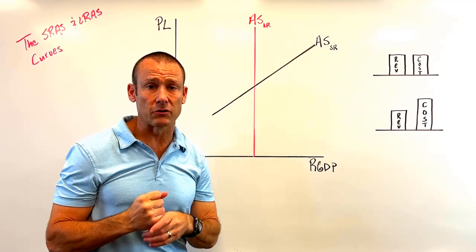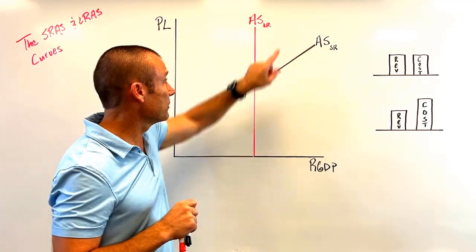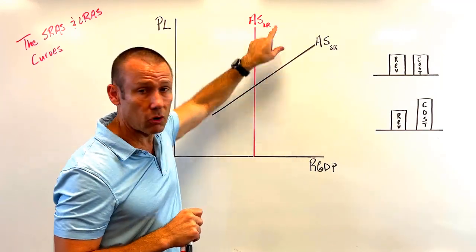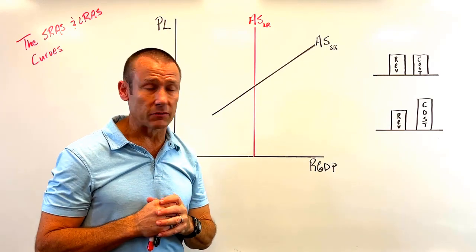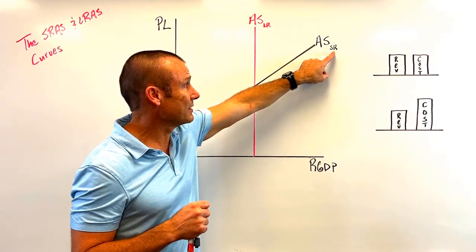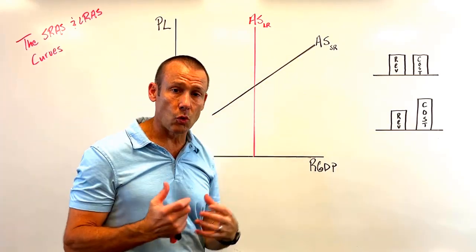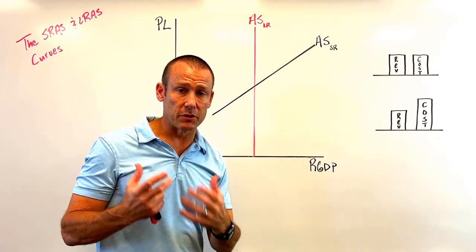You have two aggregate supply curves. One of them takes a long run perspective, and the other one takes a short run perspective.